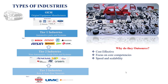Now, how do OEMs deal with Tier 1, Tier 2, and Tier 3 industries, and why do they outsource? The very important reason is cost effectiveness. They want to focus on their core competencies rather than on how individual components or parts are manufactured. Speed and scalability are also key — by focusing only on core competency, it's easier for them to stay at the top by focusing on assembling, marketing, and selling the cars.